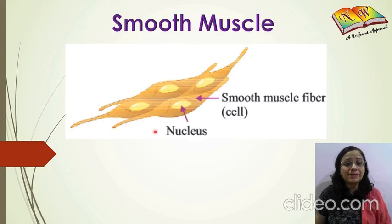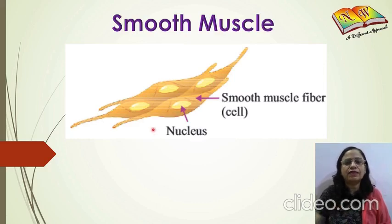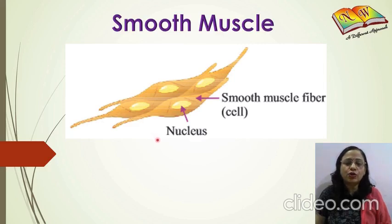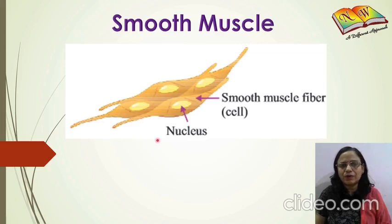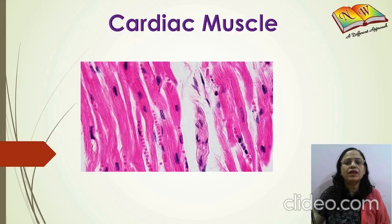These muscles are involuntary in nature — they are not under our control. The movement of internal organs like the food pipe and urinary tract is all made up of smooth muscles, and you cannot control their movement. These muscles are also found in the blood vessels and the alimentary canal, such as the stomach.